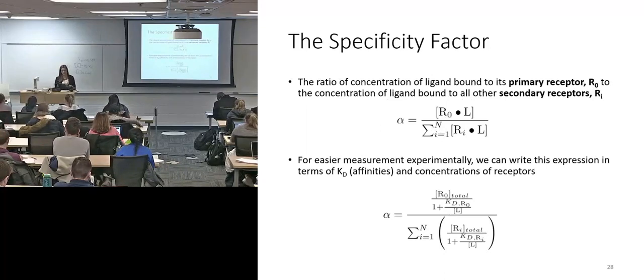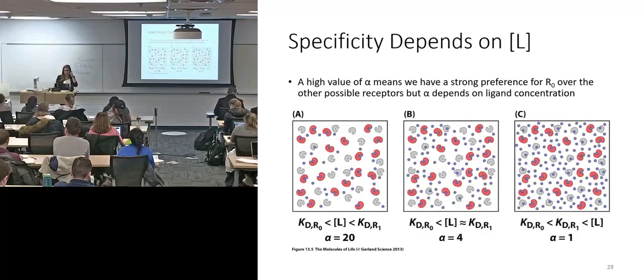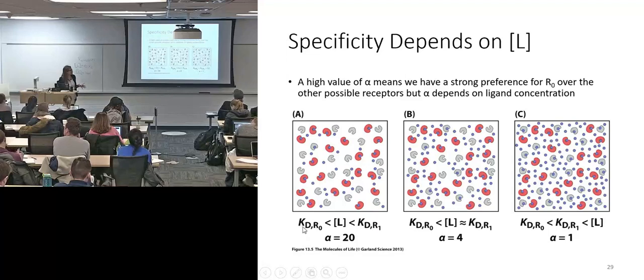Like I said, it depends on ligand concentration. So if you have a ligand concentration that falls between the KD of your primary receptor and your off-target receptor, then you'll have a high specificity value, something much greater than 1.